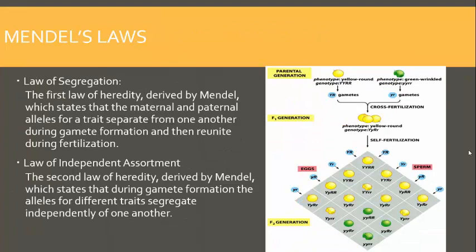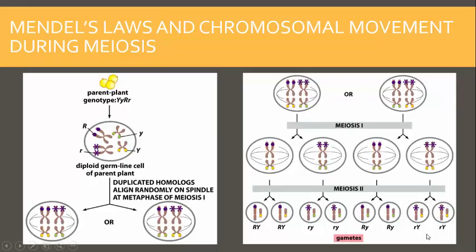Using all the information he gathered, Mendel developed two laws of genetic inheritance: the law of segregation and the law of independent assortment. This is a key concept I want you to learn in this topic. I want you to be able to connect genetic inheritance to what happens in meiosis. So let's look at how Mendel's laws actually apply to chromosome movement.